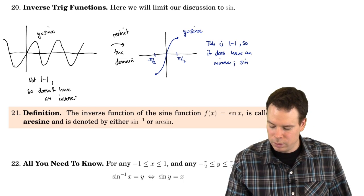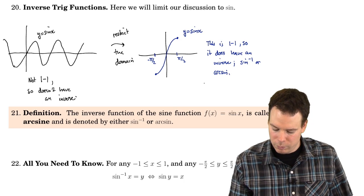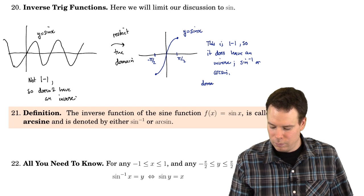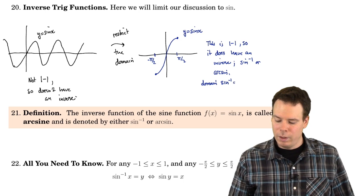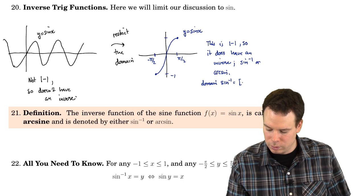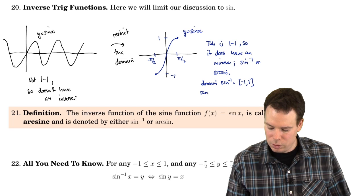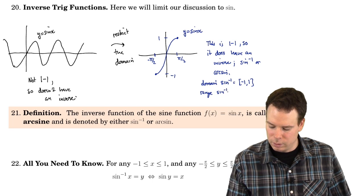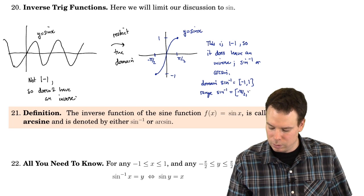The inverse is what we're going to call arcsine. We typically denote it by sine with a negative 1 as a superscript, or arcsine. What's the domain of arcsine? Well, that would have been the range of the sine function. The range of the sine function is from negative 1 to 1, so the domain of arcsine is from negative 1 to 1. The range of arcsine would have been the domain of the sine function, so that's negative pi over 2 to pi over 2.